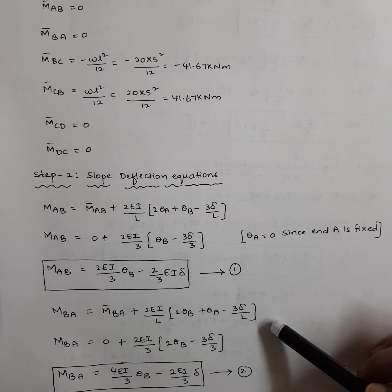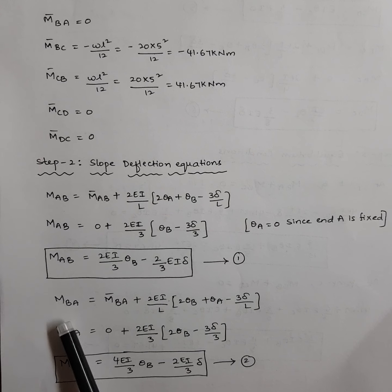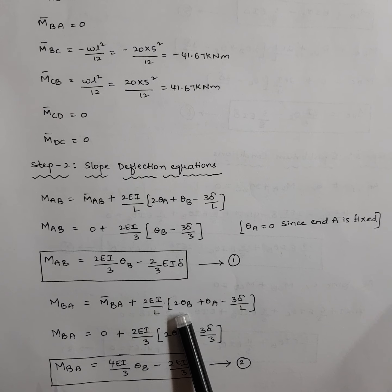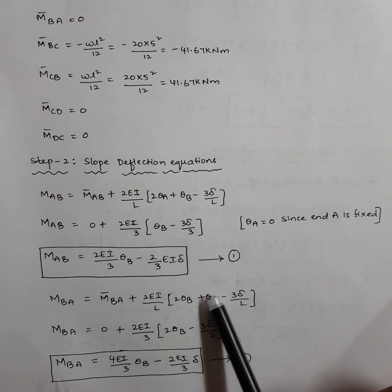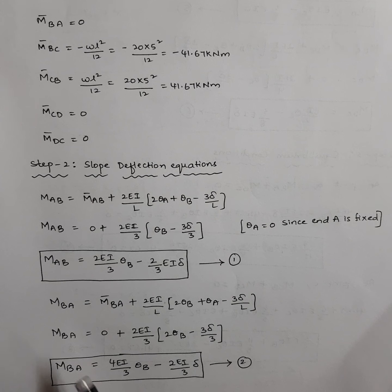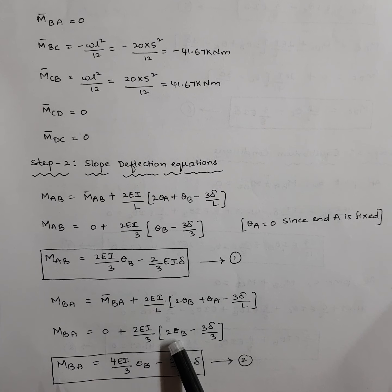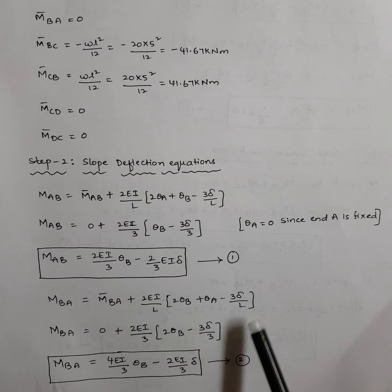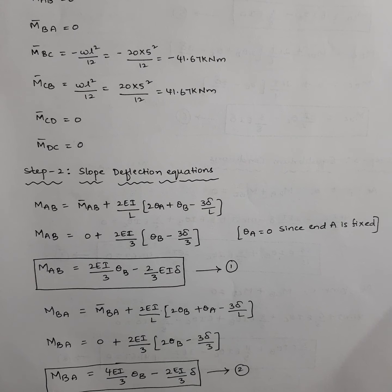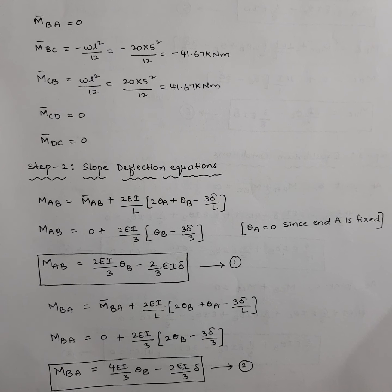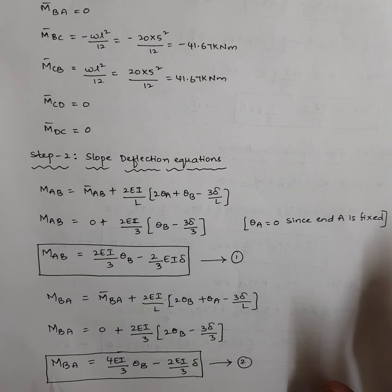For MBA: M-bar BA is zero, plus 2EI/L into (2θB + θA − 3δ/L). Theta A is zero, so MBA = (2EI/3)·(2θB − 3δ/3). Simplifying: MBA = (4EI/3)·θB − (2EI/3)·delta. This is equation number 2.